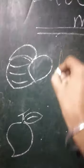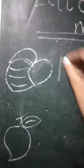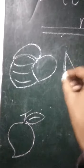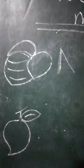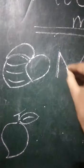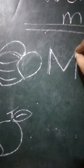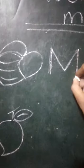Now we will learn how to write a capital M. Draw a standing line like this. Then draw a slanting line downward. Then draw a slanting line upward, and then draw a standing line again. I repeat: standing line, downward slanting line, upward slanting line, and a standing line. It's a capital M.